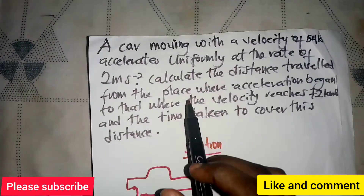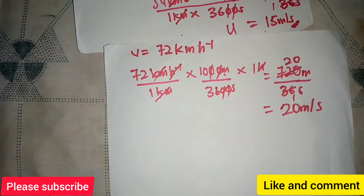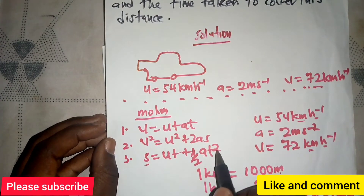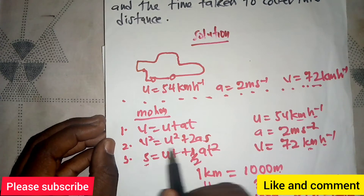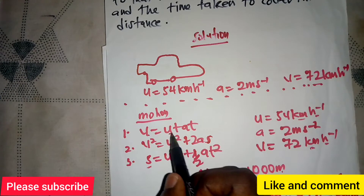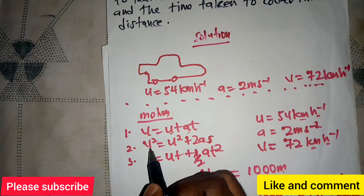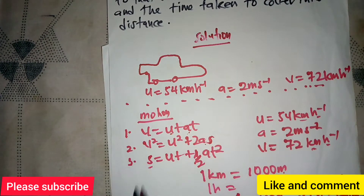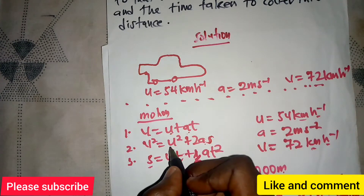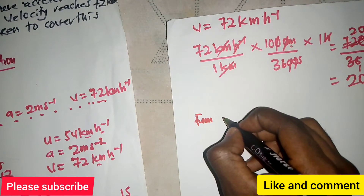Now we solve for the distance traveled from the place where acceleration began. We have final velocity, initial velocity, and acceleration — but not time. Looking at the three equations: the first equation involves time which we don't know, the second equation v² = u² + 2as contains final velocity, initial velocity, acceleration, and distance — so the second equation will work. The third also involves time so we can't use it.